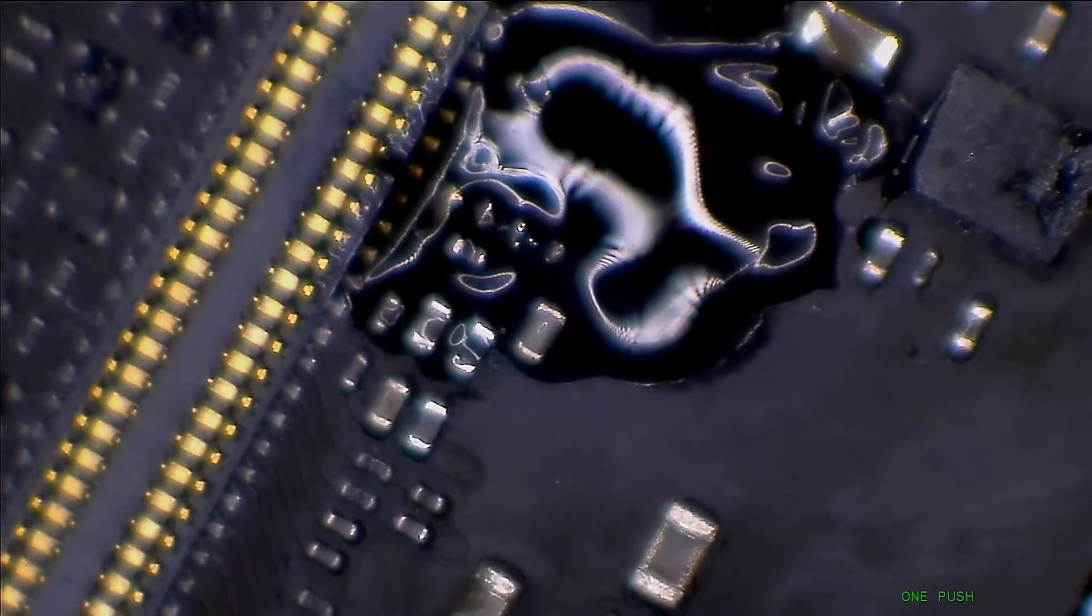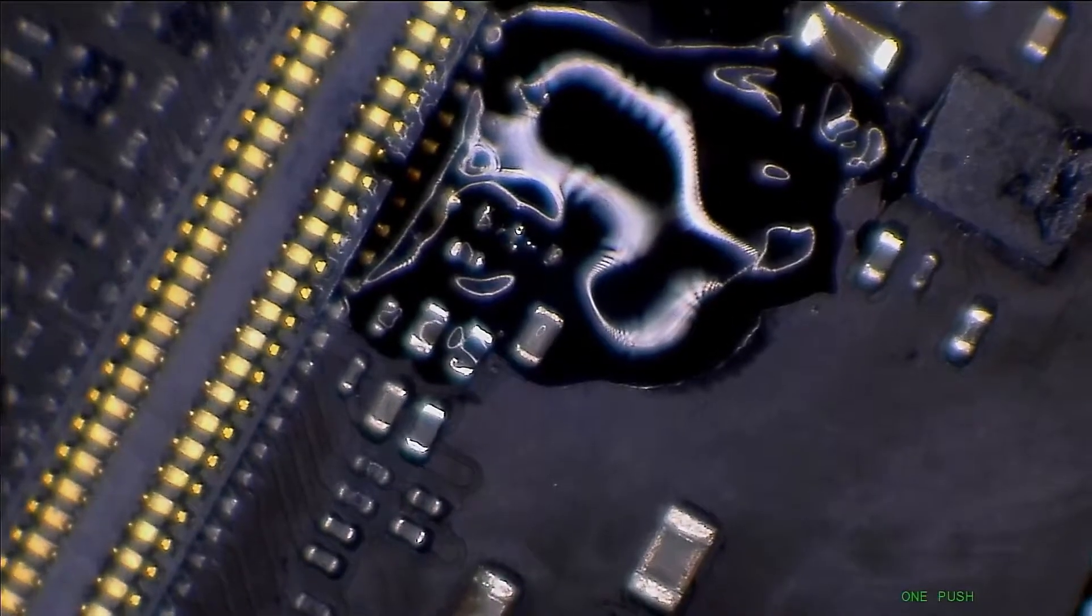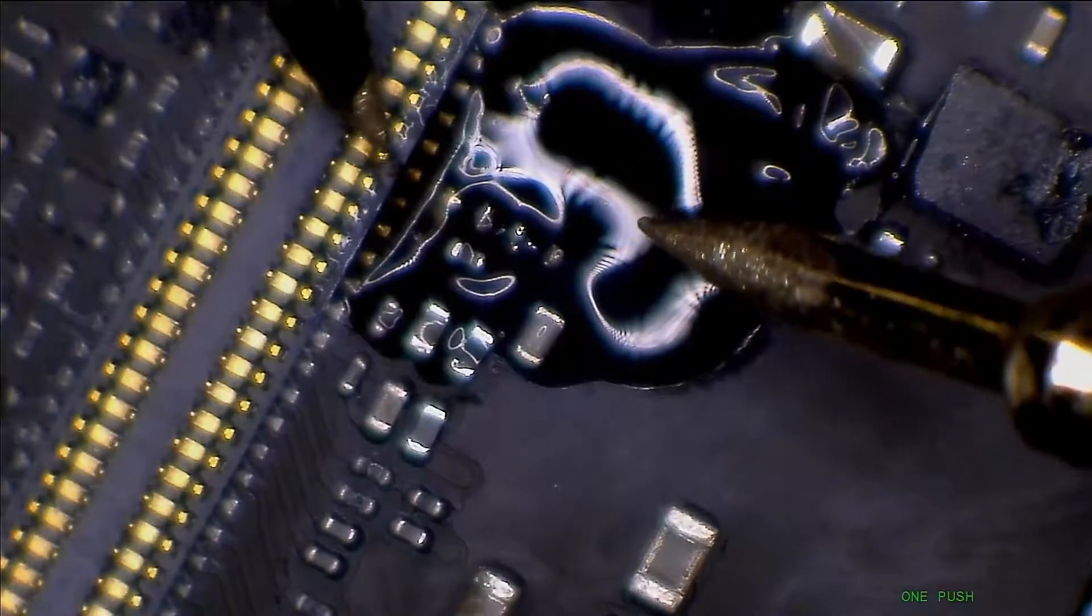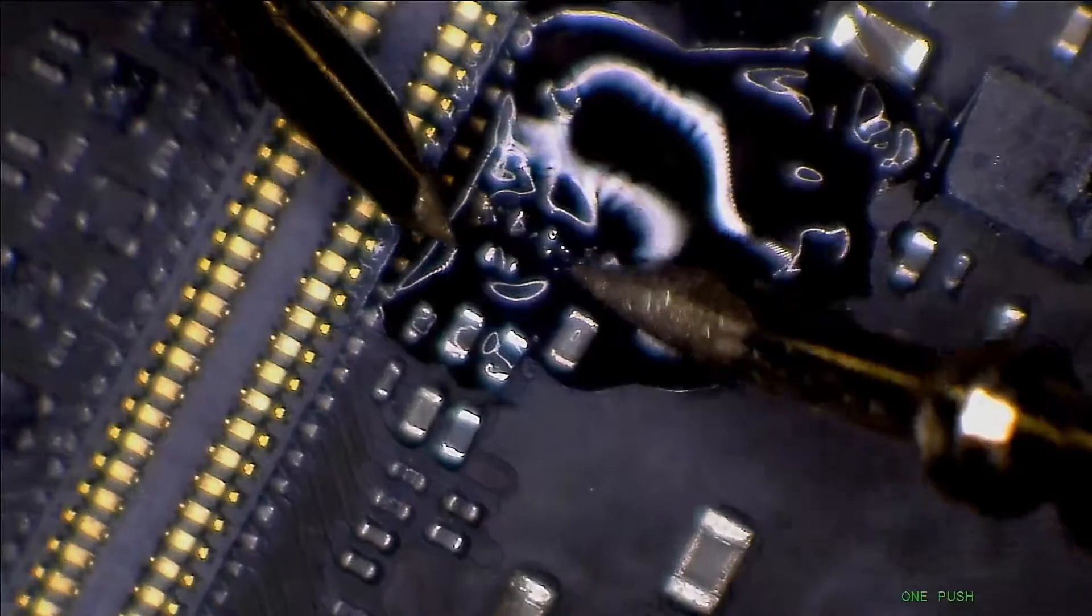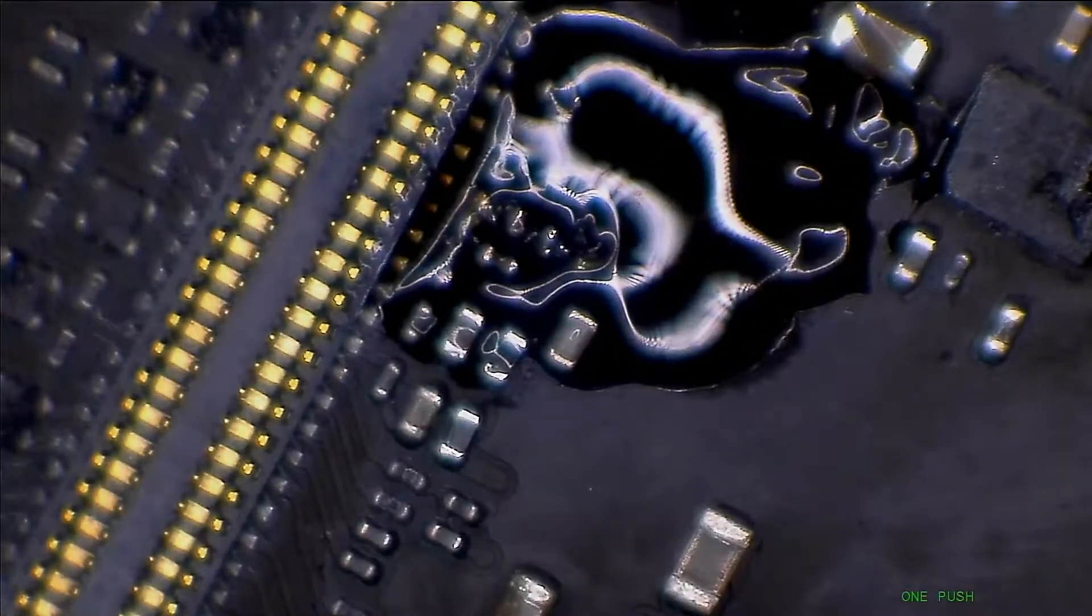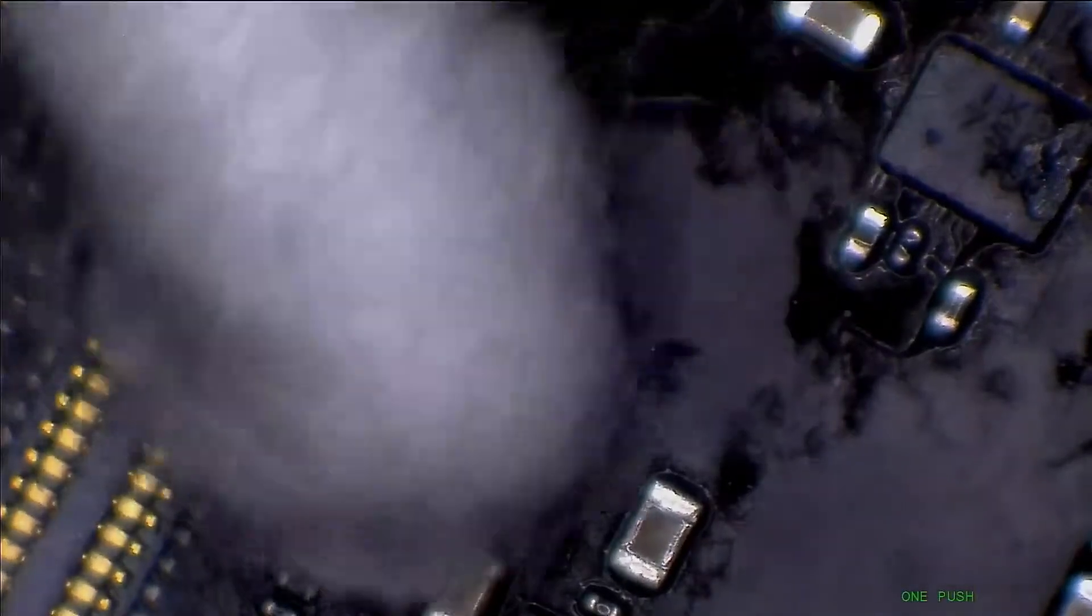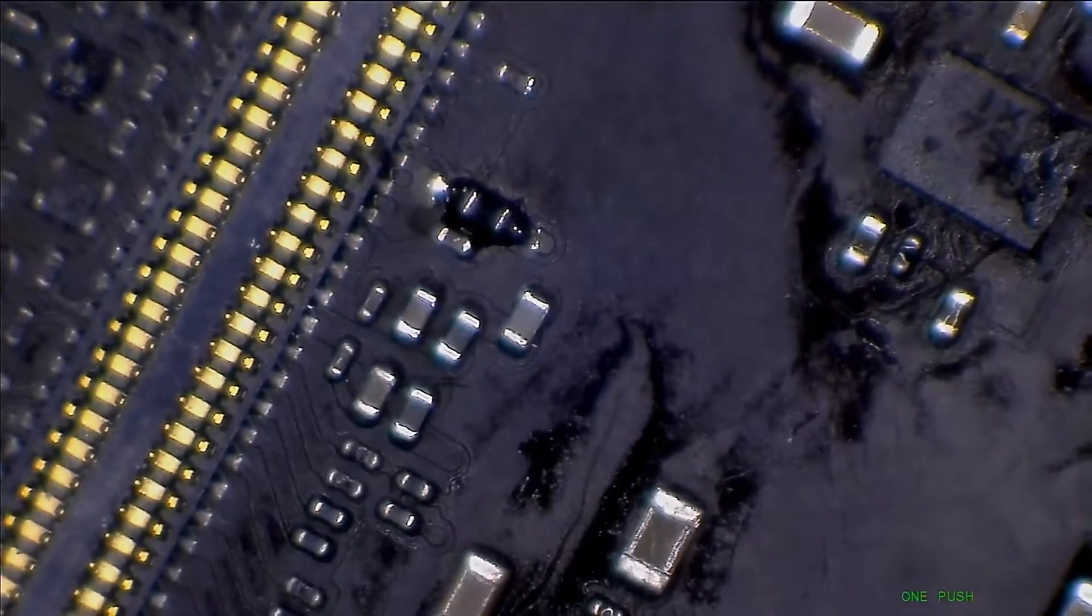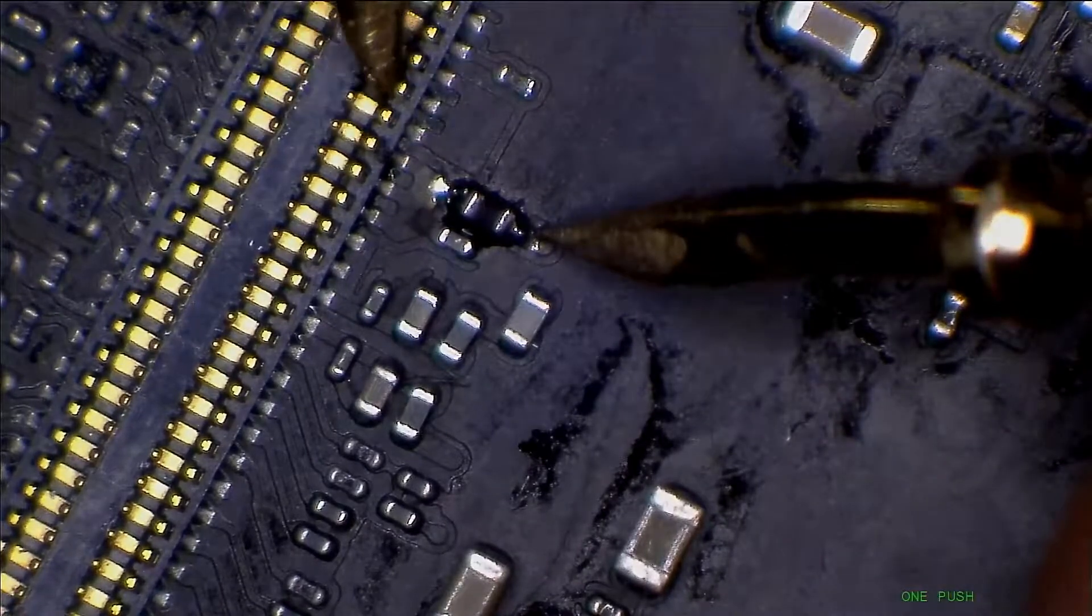I will now just check the connectivity. If we are having connectivity between the FPC connector and the other side of that filter, most probably this is the one. We get the line alive. It's working. I will just give it a clean so you can have a look. That area looks pretty okay to me. I will check the connectivity one more time. That's it. We will install the screen and see how it goes.